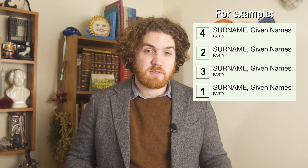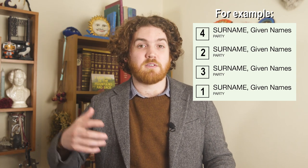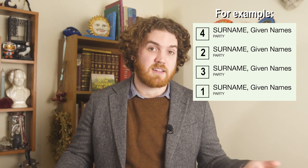The way you vote in the House of Representatives is pretty straightforward. You number every box from one to whatever the number of boxes there are. So if there are four candidates you number them from one to four, from the one you like the most to the one you like the least. If there are eight then you number them one to eight — you fill in every box with a number. The number of boxes depends on how many political parties and independents are running in that electorate.